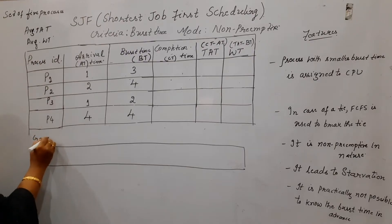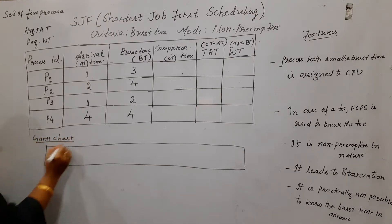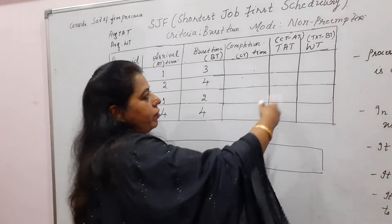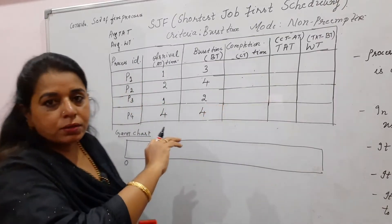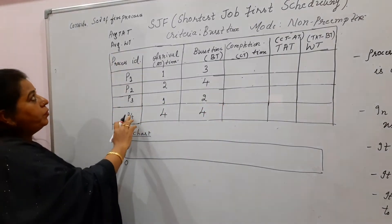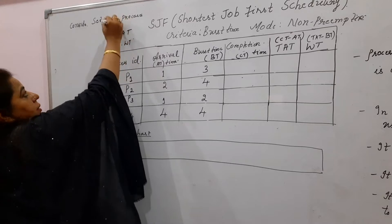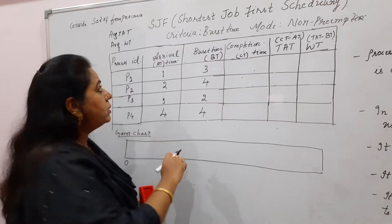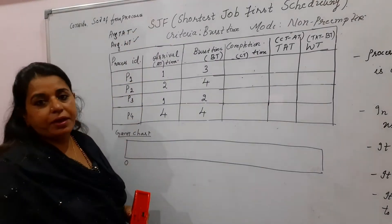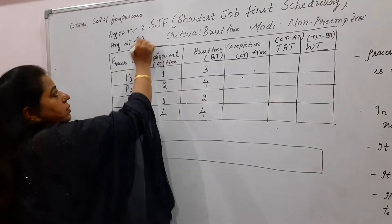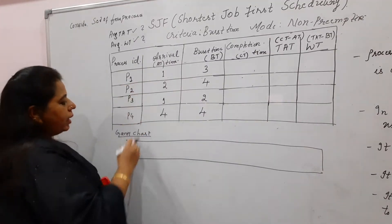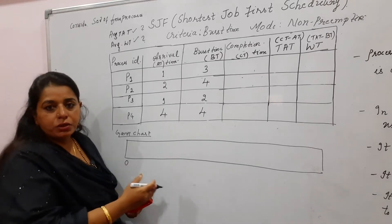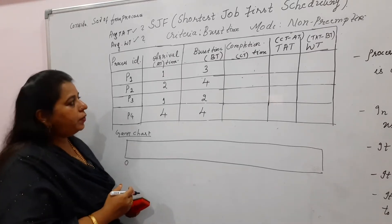I'll write the heading for the Gantt chart — it always starts at time 0. Now we write the different values. The question states: consider a set of four processes with the arrival time and burst time given. We are supposed to find the average turnaround time and average waiting time.